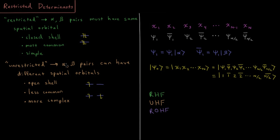Different types of Hartree-Fock correspond to these different situations. If you use restricted determinants, you are using, unsurprisingly, restricted Hartree-Fock (RHF). If you use unrestricted determinants, you're using unrestricted Hartree-Fock (UHF). There's also a third variety called restricted open-shell Hartree-Fock (ROHF) that I'm not really going to discuss much in this chapter — in fact, I'm not going to discuss UHF much either; it will be primarily RHF we focus on. Just in case you come across that acronym, restricted open-shell is where you do have restricted determinants even though you're in an open-shell system, and that comes with its own complications and trade-offs.